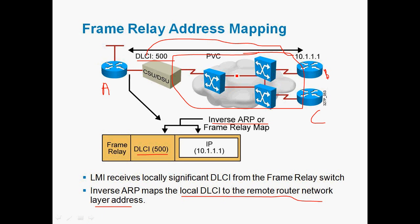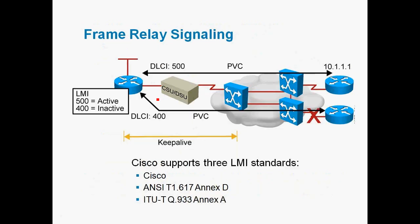Inverse ARP means using a DLCI value we can find out the destination IP. Alternatively, using the IP address we can find out the destination DLCI value — that is ARP. Now, LMI stands for Local Management Interface. It defines the signaling standards between the router and the frame relay cloud. Cisco supports three LMI standards: Cisco, ANSI, and ITU-T.